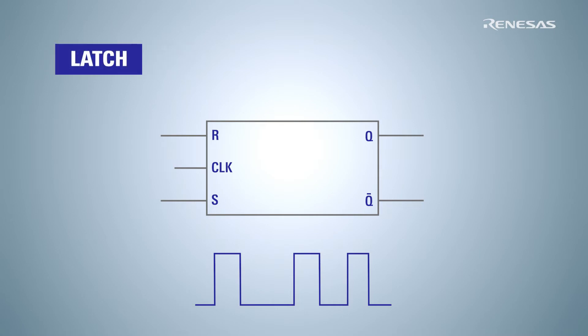A latch passes the D input when the clock is low and holds the value as memory when the clock is high.